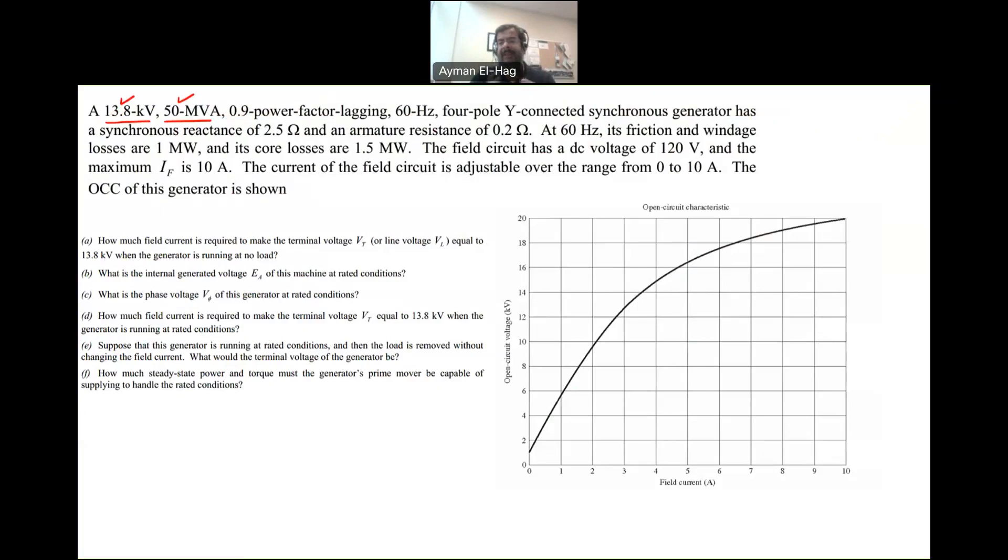60 Hz four-pole machine - these are regular quantities you need to know to find the speed. We're given the synchronous reactance XS equal to 2.5 ohm and armature resistance 0.2 ohm. When armature resistance is given, we need to consider it in the model. We're also given friction and windage losses as 1 megawatt and core losses as 1.5 megawatt. The field circuit uses 120 volt DC with maximum field current of 10 amps.